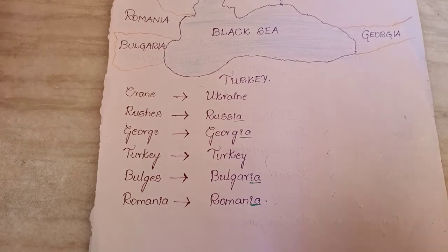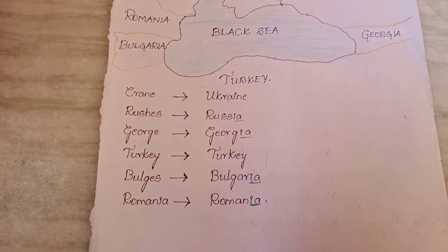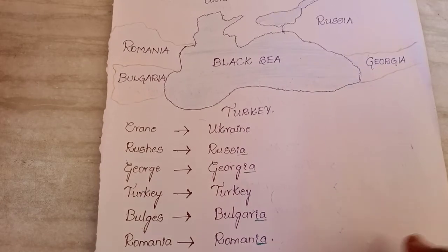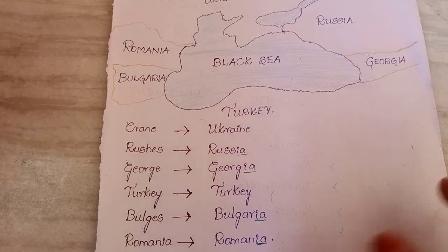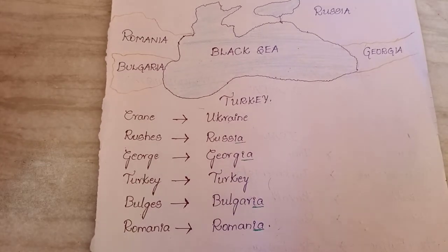So, the countries whose names end with 'ia' or 'ea' will be the Black Sea countries — useful if you have any confusion in selecting options. This is all about Black Sea countries.